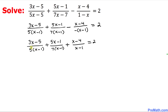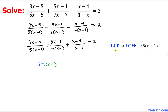This step is really crucial — pay attention to the denominators. We have a constant 5 and a constant 7. I'm going to write 5 times 7, and then look at the factor x minus 1, which appears three times but we write it just once. Therefore our least common denominator, or least common multiple, turns out to be 35 times x minus 1.